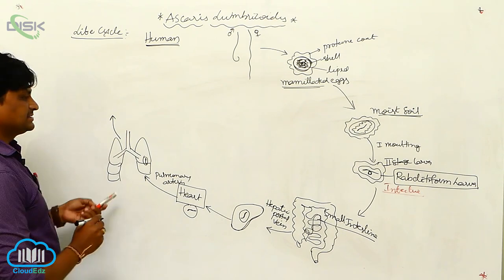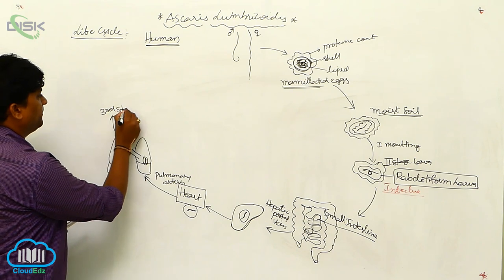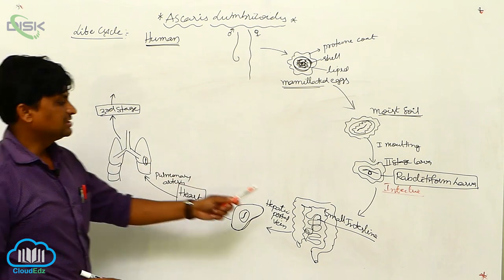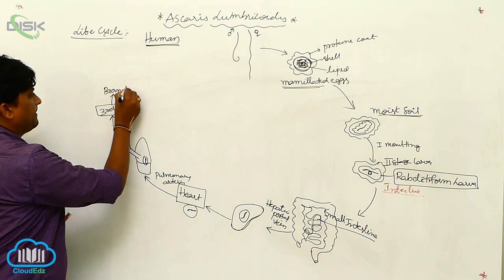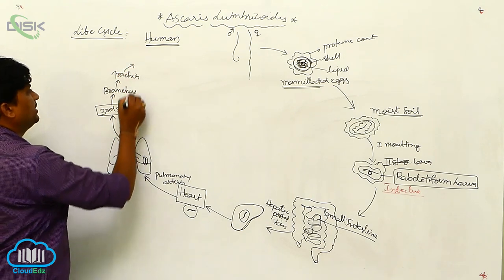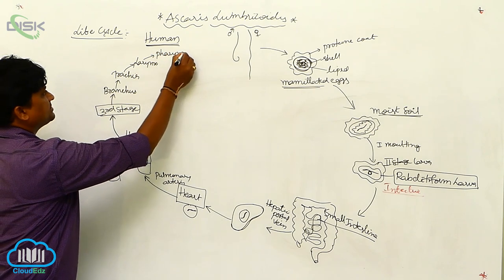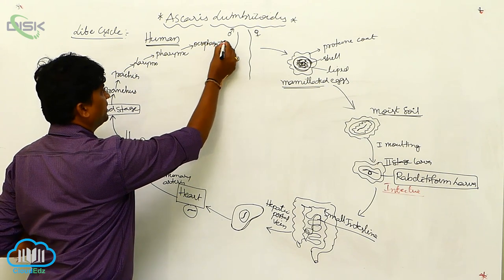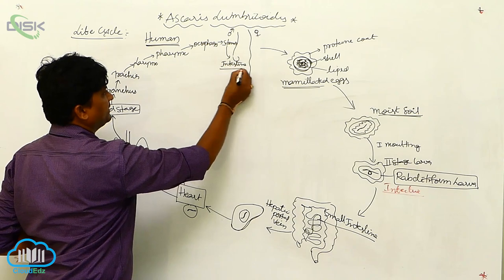In the lungs, molting takes place. The second stage larva undergoes a second molting, and the third stage larva is formed. The third stage larva then migrates upward from the alveoli to the bronchi, bronchi to the trachea, trachea to the larynx, larynx to the pharynx, and then to the esophagus.